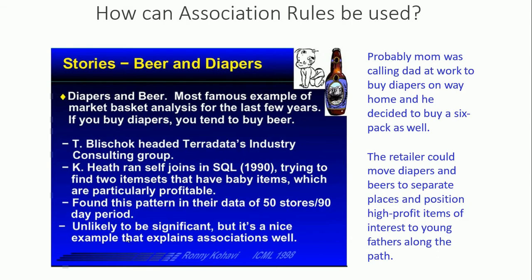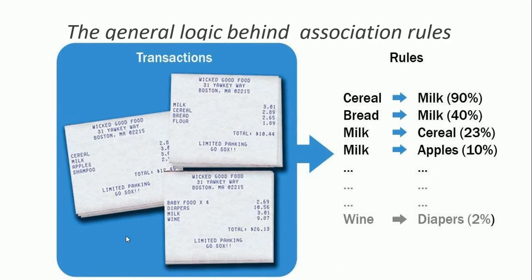The general logic behind association rules is simple and clear. If you're buying cereal, the chance of also buying milk is 90%. If you're buying bread, the chance of buying milk is 40%. If you're buying milk, the chance of purchasing cereal is 23%. If you're buying milk, the chance of purchasing apples is 10%. These are the association patterns you find to make decisions.